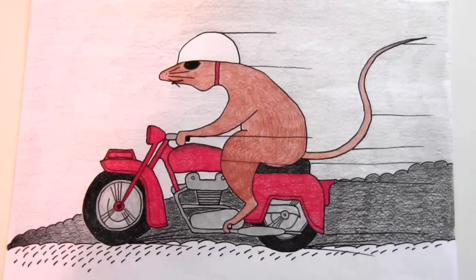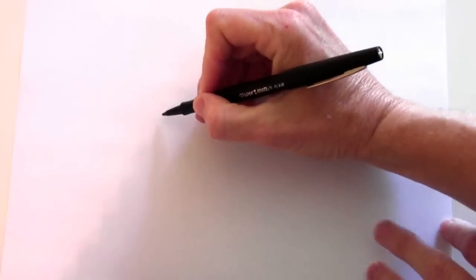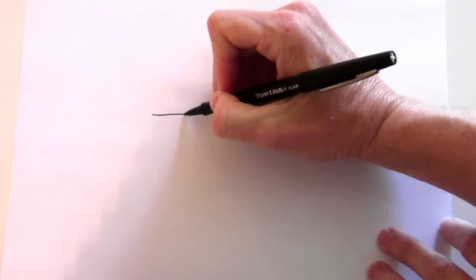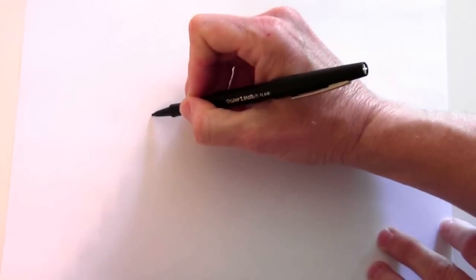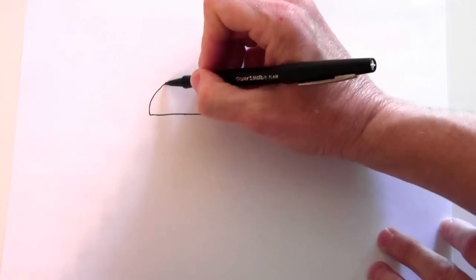I'm going to draw the mouse and the motorcycle. First we're going to start with the helmet and it's a half circle.